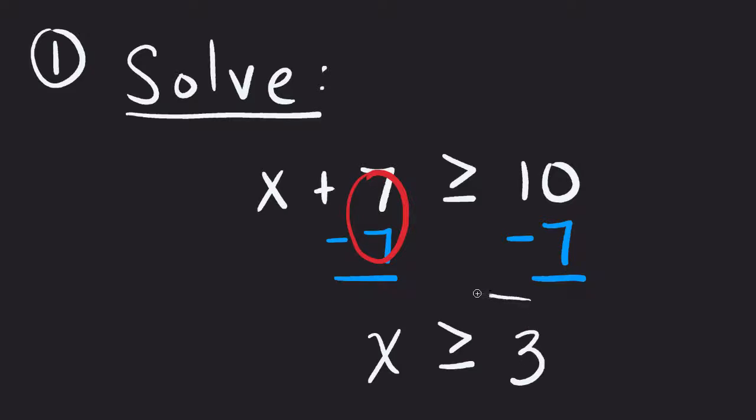10 minus 7 is 3. So this tells me that any number I pick, as long as it's greater than or equal to 3, will make this work.